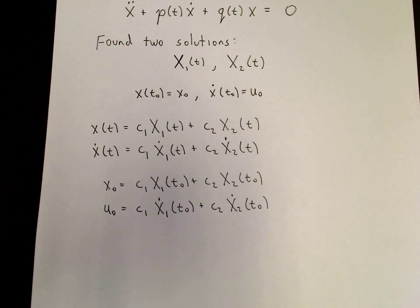And then we need to solve for the unknown coefficients c1 and c2. x naught and u naught are given. x1 and x2 evaluated at t naught are supposed to be known as are the derivatives. So this is a system of two equations and two unknowns, the unknowns being c1 and c2.